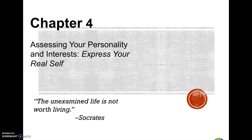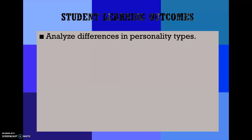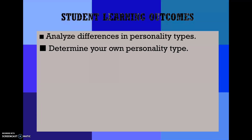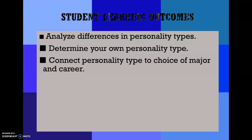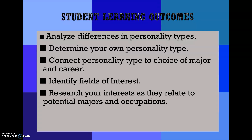Chapter 4 will be assessing your personality and interest. We'll be going over four student learning outcomes: analyze differences in personality types, determine your own personality type, connect personality type to choice of major and career, identify fields of interest, and research your interests as they relate to potential majors and occupations.